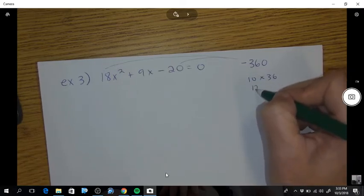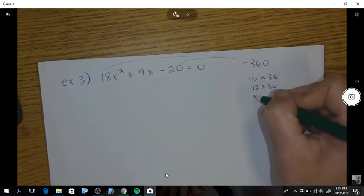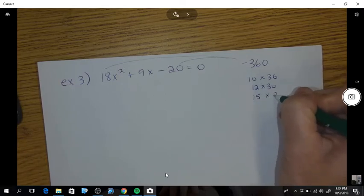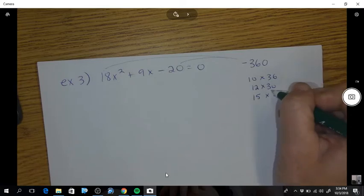So 26 is the most I can get. Does not divide by 11. 12 times 30. Nope, that would be 18. The next day would be is 15 times 24. That could get me a 9. Negative, positive.